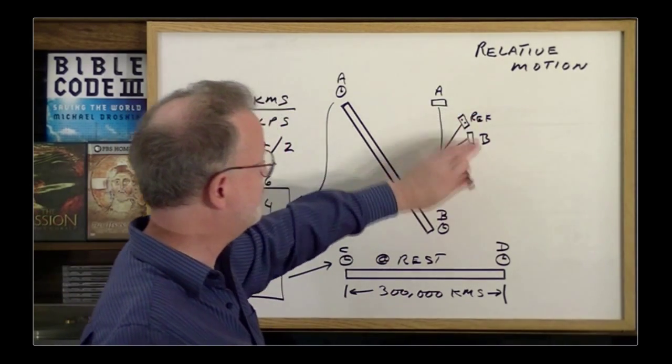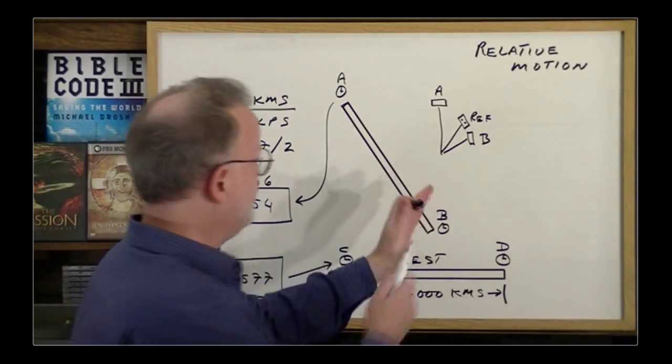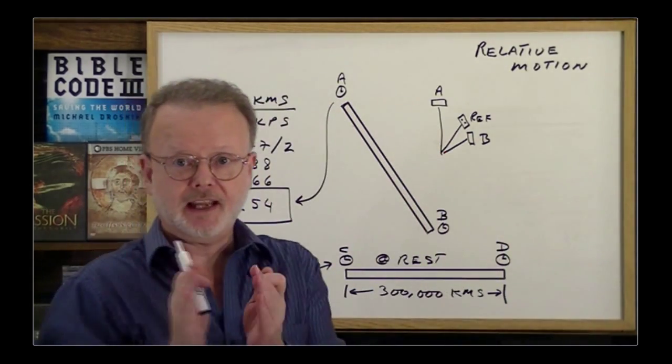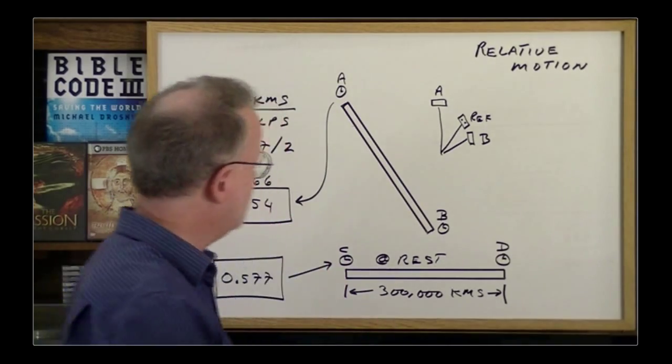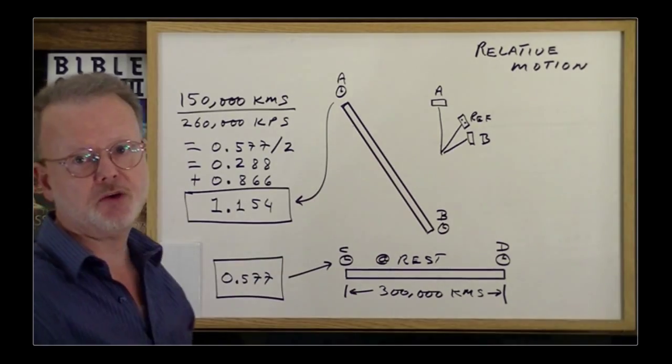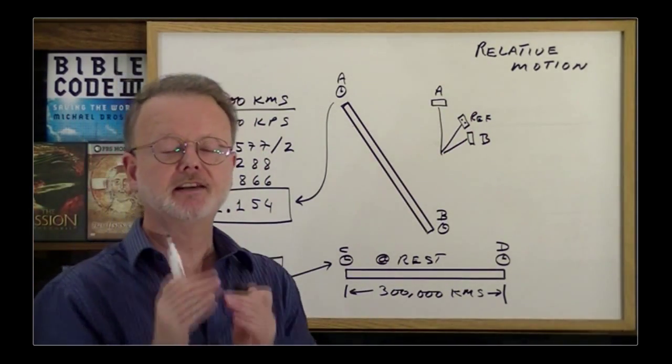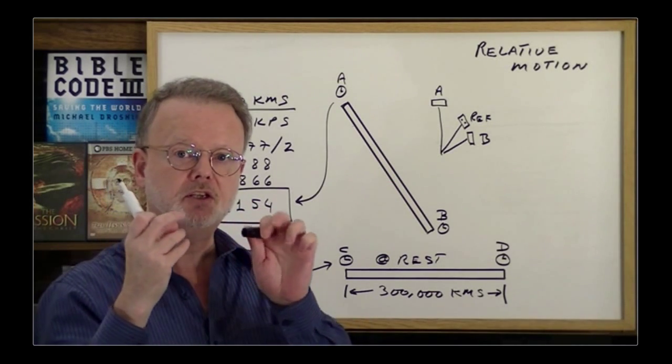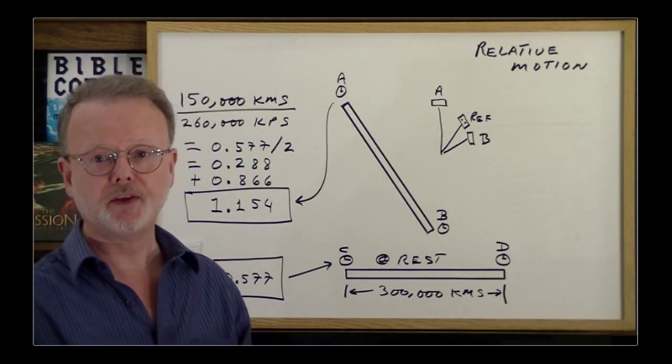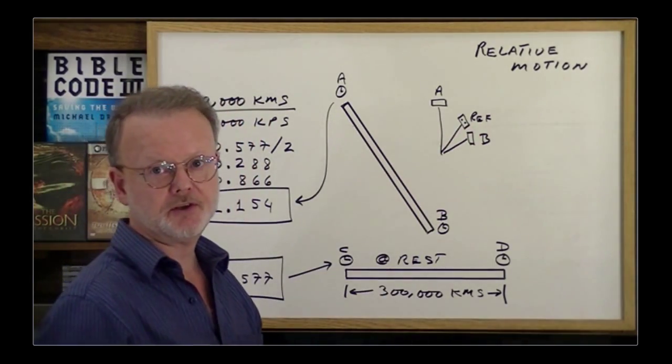But if he takes over and moves faster than Mr. Reference, let's say he's in the B position now, even though he shrunk to even smaller size in length and the clocks are ticking even slower, because everything seems to be relative due to the change of measurement instruments, once again, Mr. Reference seems to have contracted in length, and his clocks seem to be ticking slower, even though that's not the case at all.